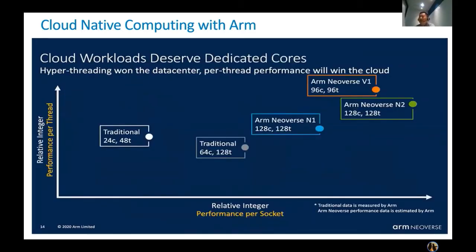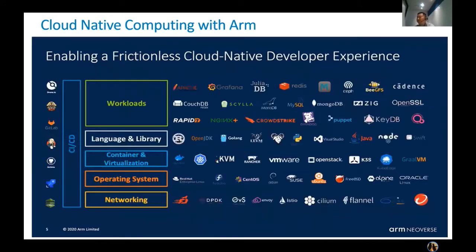Cloud workloads deserve dedicated cores for the hyper-threading wound data center, and per-thread performance will win the cloud, with more and more high-performance cores and threads. ARM is enabling a frictionless cloud-native developer experience from various open-source software projects.